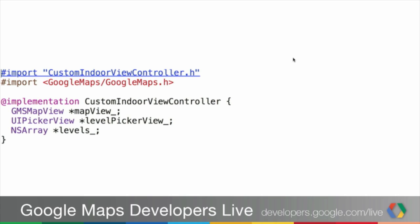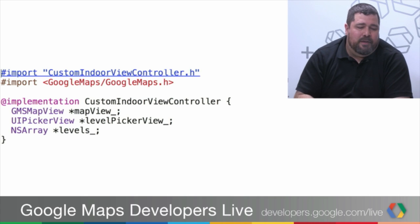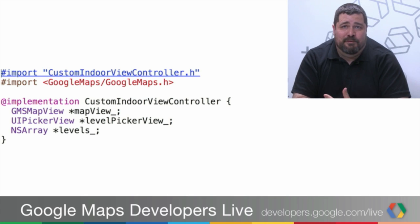I'm creating my view controller — the custom indoor view controller — and I'm creating three objects. First, the map view, which you would create any time you're using the map. Second, a UI picker view, which is a standard one, not a Google Maps one — it's a convenient way to demo this, though you can of course create your own view. And third, an array called levels, which holds the different floors of the building.